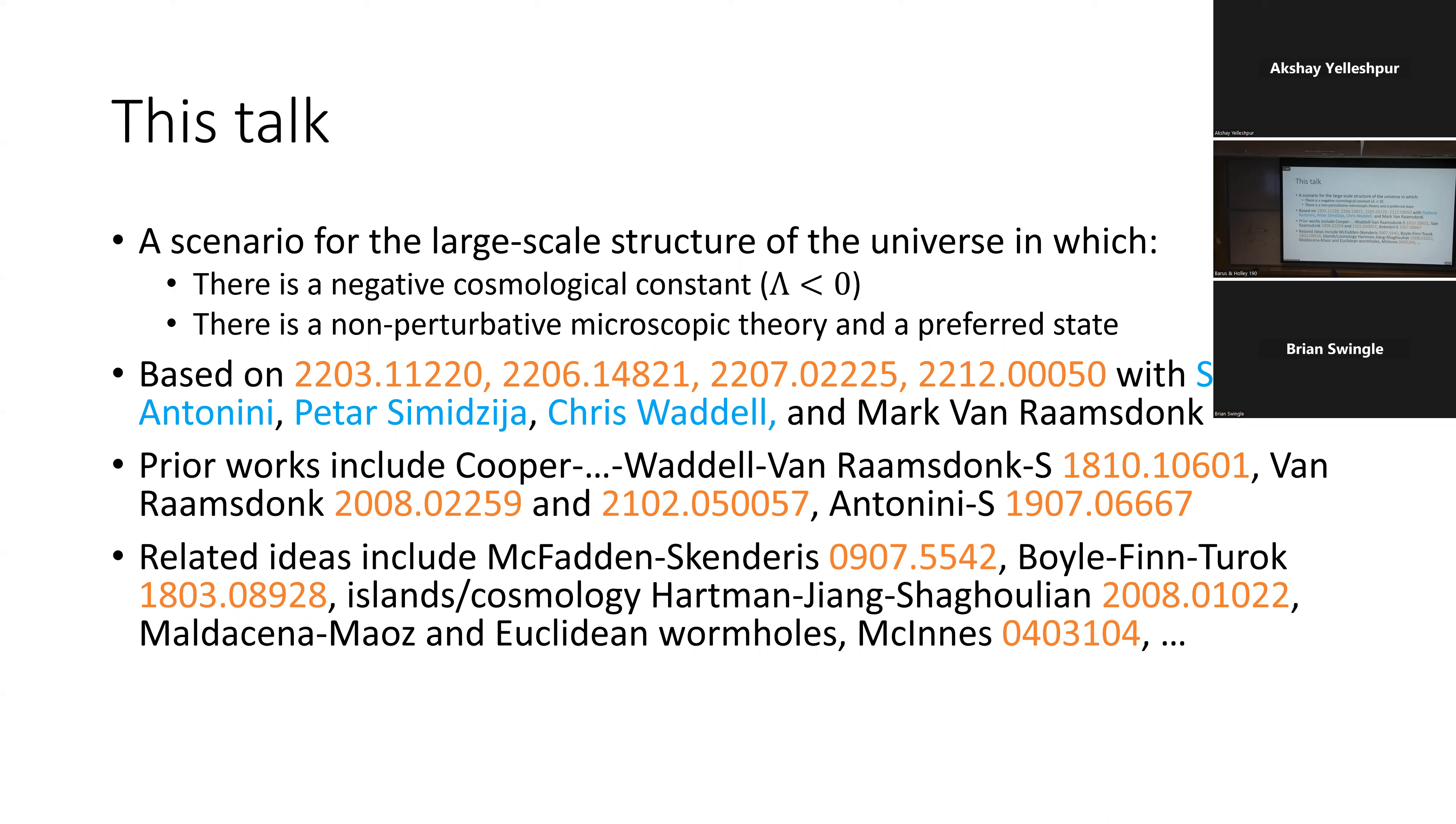The main point will be, this is going to be a theory or a scenario for large scale structure of the universe in which we have fundamentally a negative cosmological constant. So not positive, but negative. Nevertheless, we'll be able to get acceleration. And there'll be some sort of non-perturbative microscopic theory and special states. Now, again, I'm going to emphasize, I don't have a precise string theory construction of this. Maybe it just doesn't work. I don't know. But we have kind of the framework of what such a theory should look like.